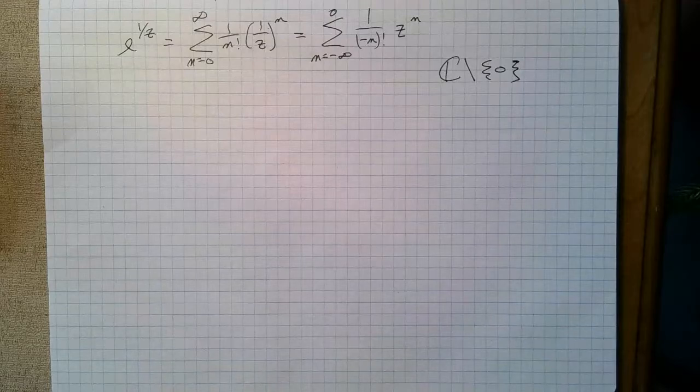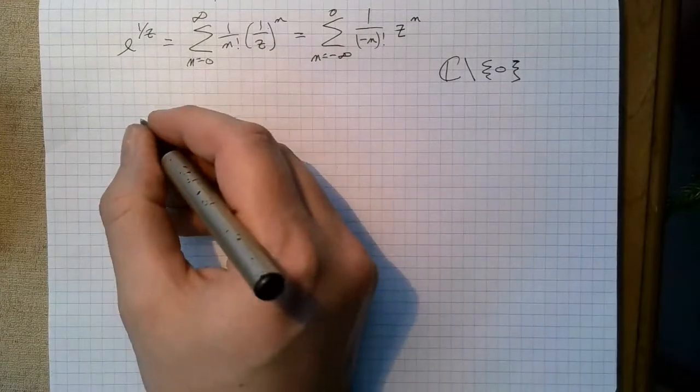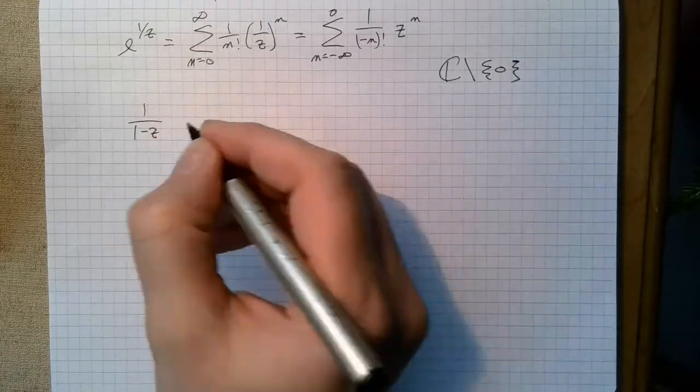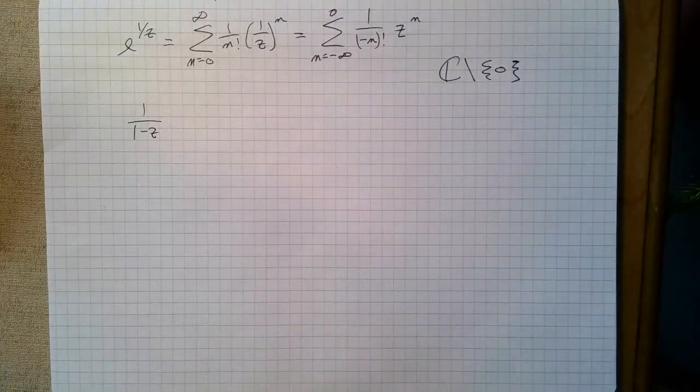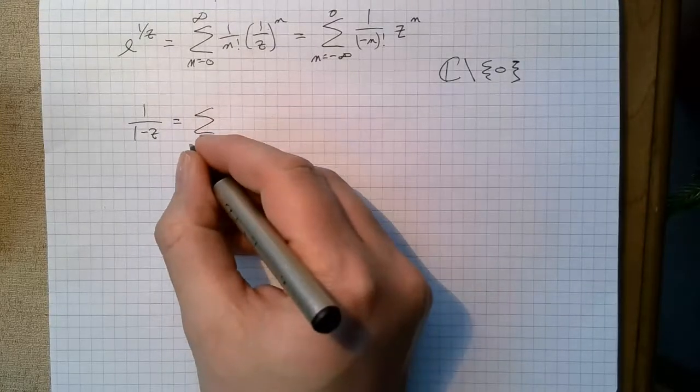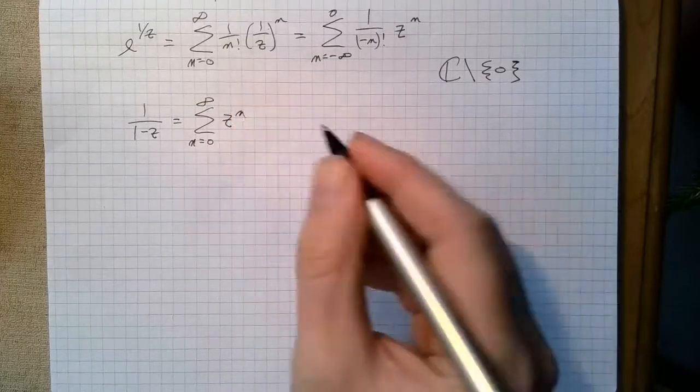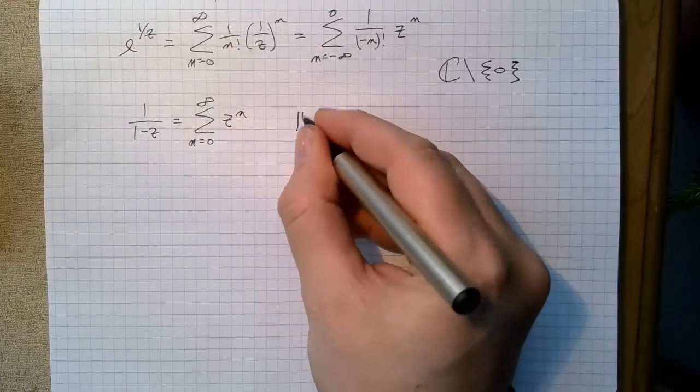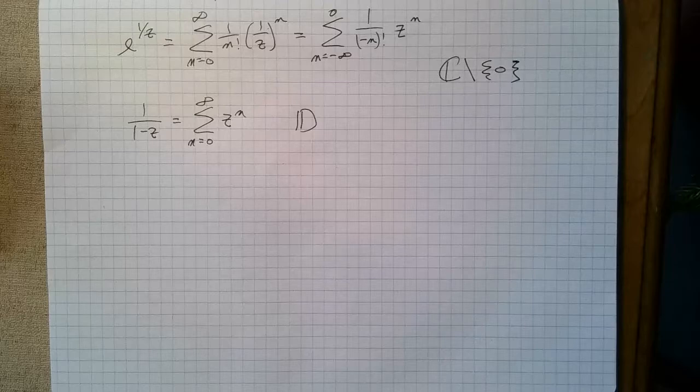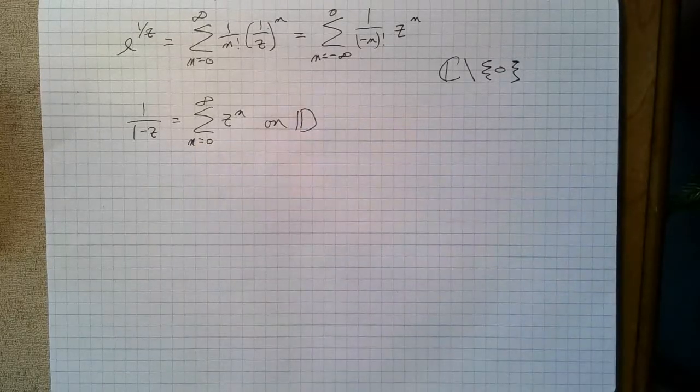Now, on the other hand, if we take another example, if I take 1 over 1 minus z, if I take its standard power series, which would be the geometric series, this converges on compact subsets of the unit disk, right? So this is the unit disk, right?